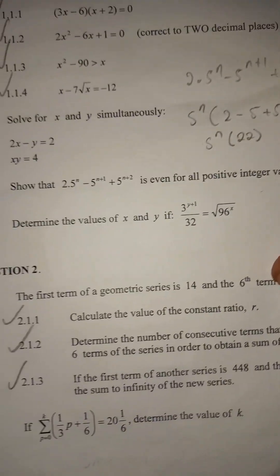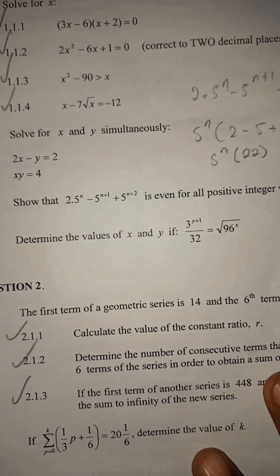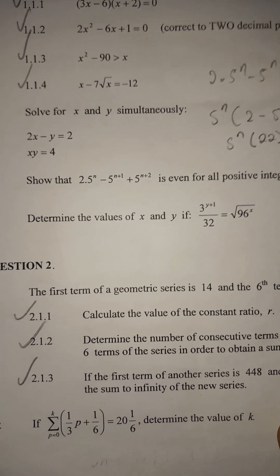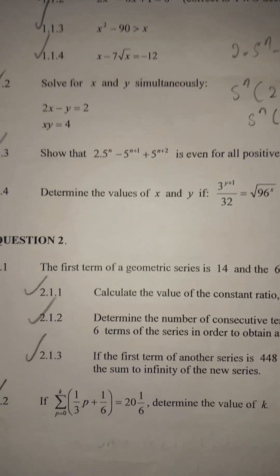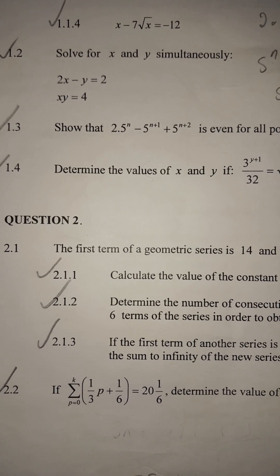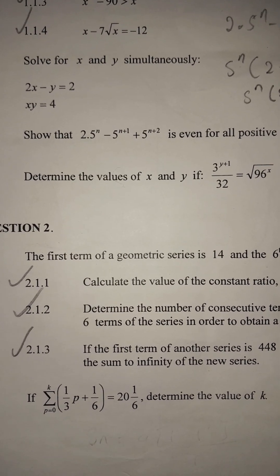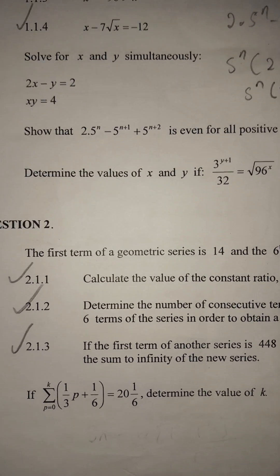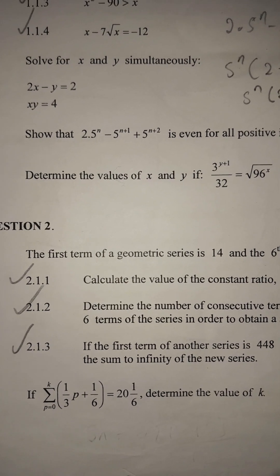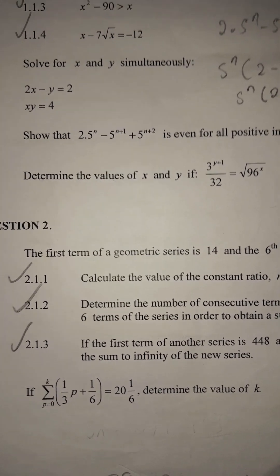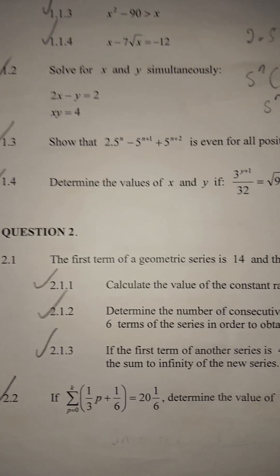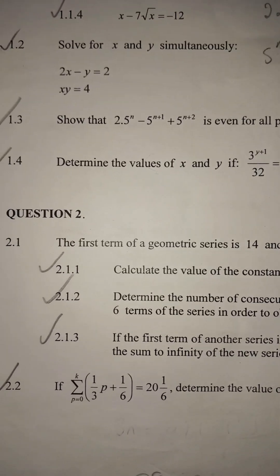This question paper was out of 150 marks and the time was three hours. We have already done Question 1 — check my previous video. Today we are going to look at Question 2, and the remaining questions: Question 6, 7, 8, 9, and the remaining probability questions.